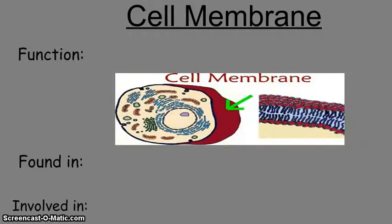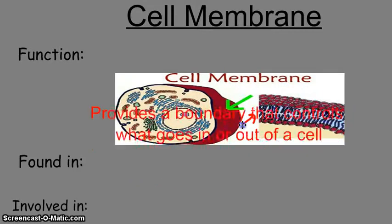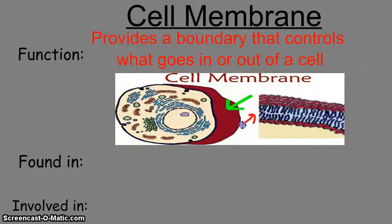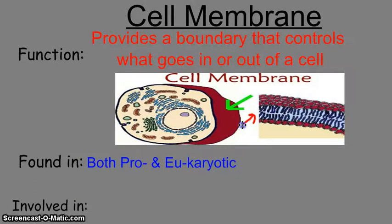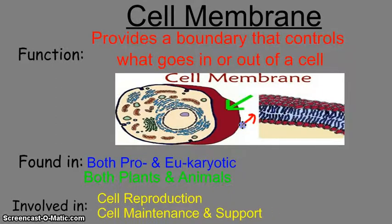The cell membrane is the outside skin of the cell. Up close it looks like a double layer, which we'll discuss more during cell transport. Its function is to create a boundary between the inside and outside of the cell and to control what goes in and out. It's found in both prokaryotic and eukaryotic cells, including plants and animals. It's involved in cell reproduction and cell maintenance and support, particularly maintaining homeostasis.